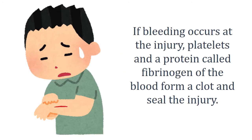If bleeding occurs at an injury, platelets and a protein called fibrinogen form a clot and seal the injury. Blood, which is normally in a liquid state, transfers into a gel-like form, and this protects against excessive bleeding. This is also an important function of blood.